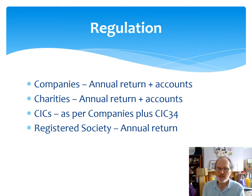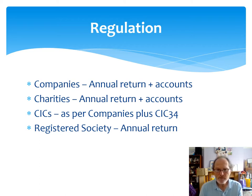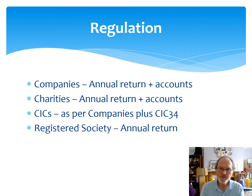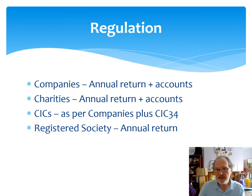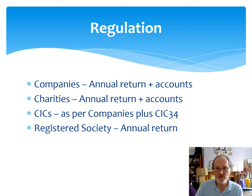The regulatory regimes are a little bit different for each model. A company has to submit an annual return and accounts to Companies House — that's pretty much it. A charity has to do something similar with a bit more information to the Charity Commission. CICs have to do what companies do with an additional form called the CIC34 form, where you declare what you've done as a business, the impact you've had, how you've consulted your community of interest, and what you've done with money and assets — a little bit more regulation every year compared to a normal company. A registered society also does an annual return to the Financial Conduct Authority. Annually, there will be key documents you need to produce to prove you're delivering a community benefit for whichever model you choose.